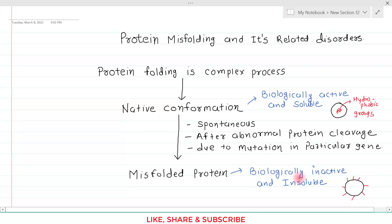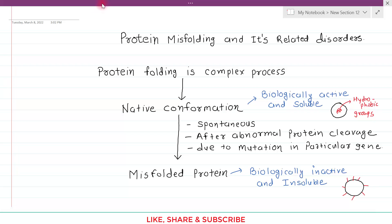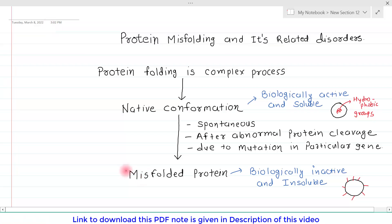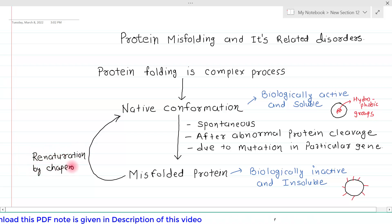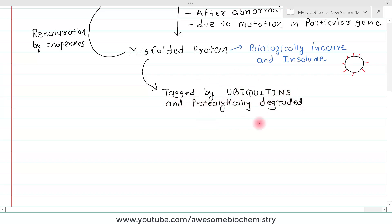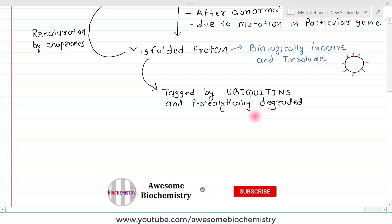Misfolded proteins are bad quality proteins, and our body has an efficient system to tackle them. One way is that the misfolded protein is converted back to its native conformation — a process known as renaturation, which is brought about by chaperones. The second way is that if renaturation is not possible, the misfolded proteins are tagged by ubiquitins and proteolytically degraded. This ubiquitin-associated proteolytic degradation system is a separate topic covered in a future video.